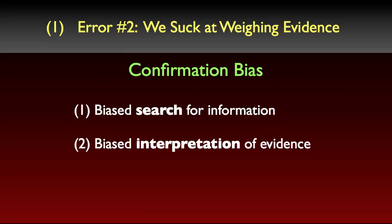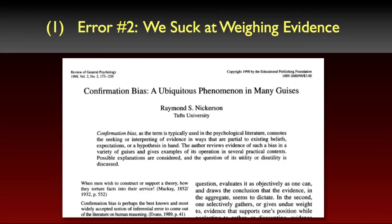Then there's biased interpretation of evidence. This is where you give two groups the same information, the same evidence, but they interpret the evidence differently depending on their prior beliefs. If you strongly believe some hypothesis, you'll be inclined to think that studies supporting that hypothesis are well-conducted and convincing, but for studies that don't support your hypothesis, you'll be inclined to think they're not well-conducted and not convincing. One way to think of this is that people set higher standards of evidence for hypotheses that go against their current expectations, and lower standards for those that support their expectations. A third form of confirmation bias involves biased memory — even if someone has tried to collect evidence in a neutral, unbiased way, they may still remember it selectively, recalling more of the confirming evidence than the disconfirming evidence, skewing the evidence in favor of their expectations.